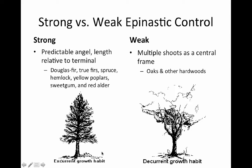We can describe these growth patterns as excurrent and decurrent growth. Excurrent growth is pretty straight, like a cone, whereas decurrent growth is much more branchy with broad patterns.